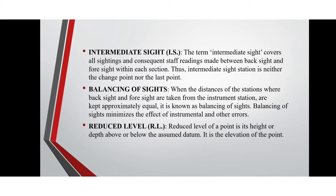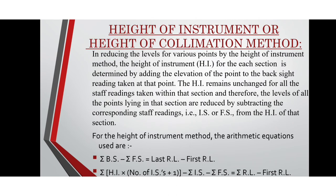Balancing of sights minimizes the effect of instrumental and other errors. Reduced level: the reduced level of a point is its height or depth above or below the assumed datum — it is the elevation of the point. In the Height of Instrument method, the height of instrument for each section is determined by adding the elevation of the point to the back sight reading taken at that point. The height of instrument remains unchanged for all staff readings taken within that section, and therefore the levels of all points are reduced by subtracting the corresponding staff readings — that is, intermediate sight or foresight — from the height of instrument. The arithmetic check equations are: sigma backsight minus sigma foresight equals last reduced level minus first reduced level; and sigma(HI × (number of intermediate sights + 1)) minus sigma intermediate sight minus sigma foresight equals sigma reduced level minus first reduced level.